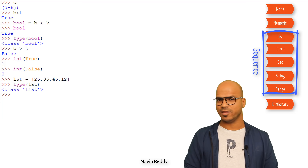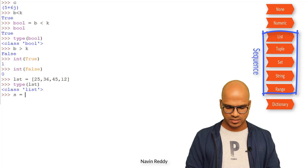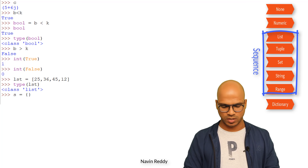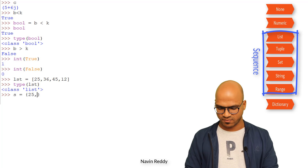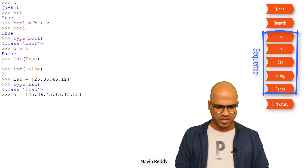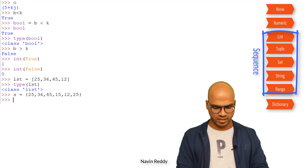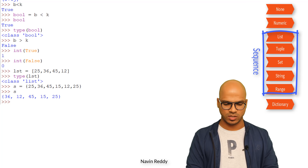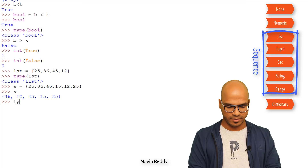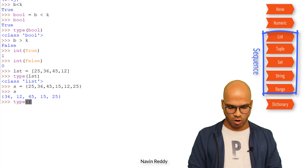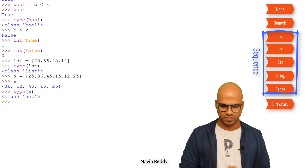The same thing can be done with set. If I create a set — s equal to curly braces with values — and if I check s, you can see the values are there and they are not repeating. If I check the type of s, it is set.